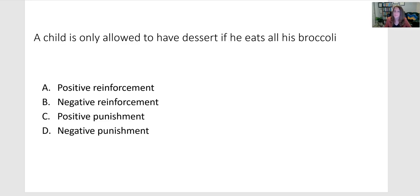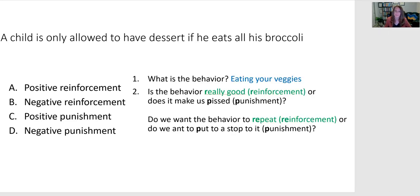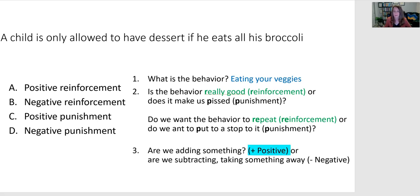A child is only allowed to have dessert if he eats all of his broccoli. Eating your veggies is the behavior — we want to reinforce that, we want to increase that behavior. And we're going to give him something he didn't have before, adding something: dessert. Which makes it positive reinforcement.